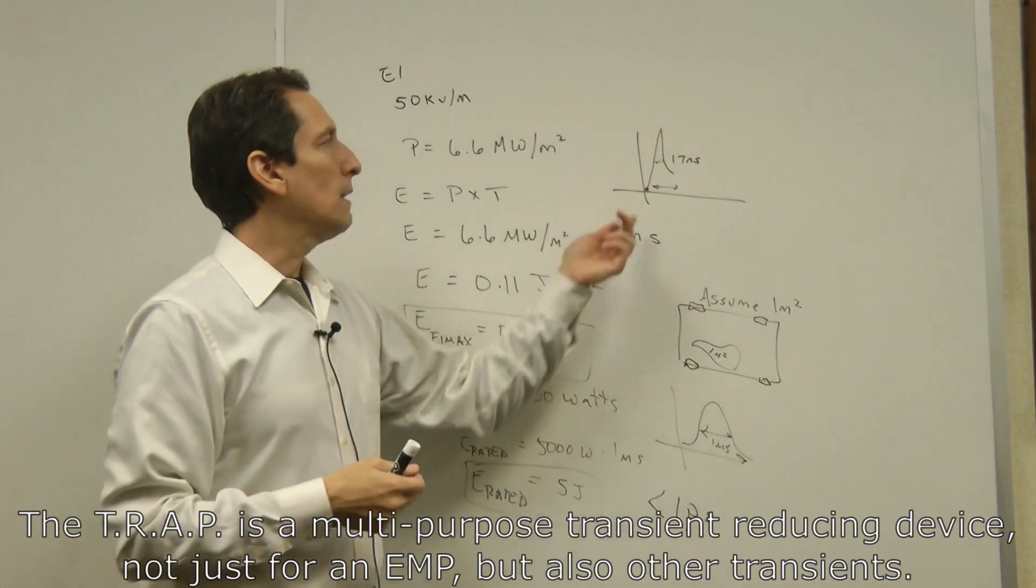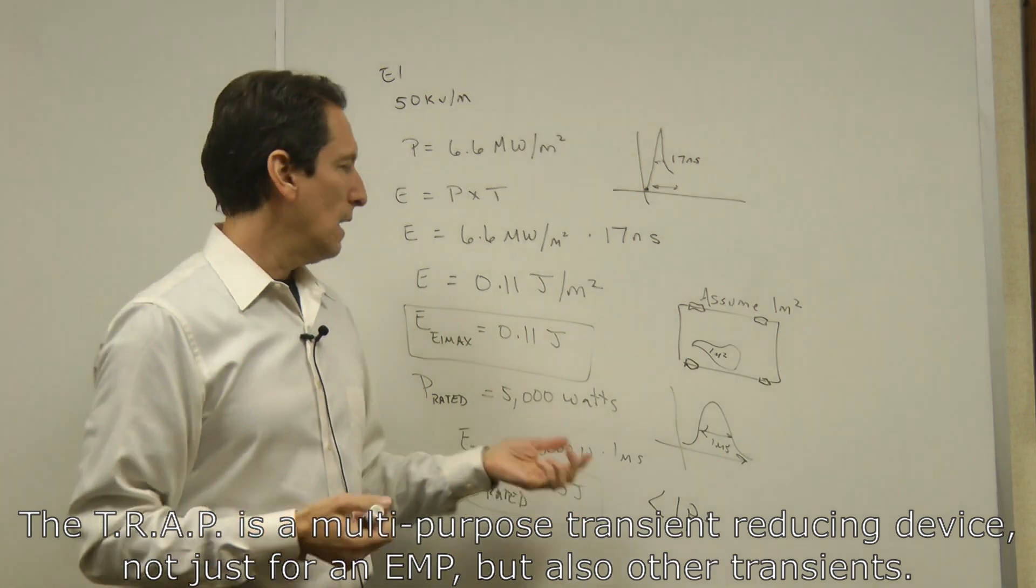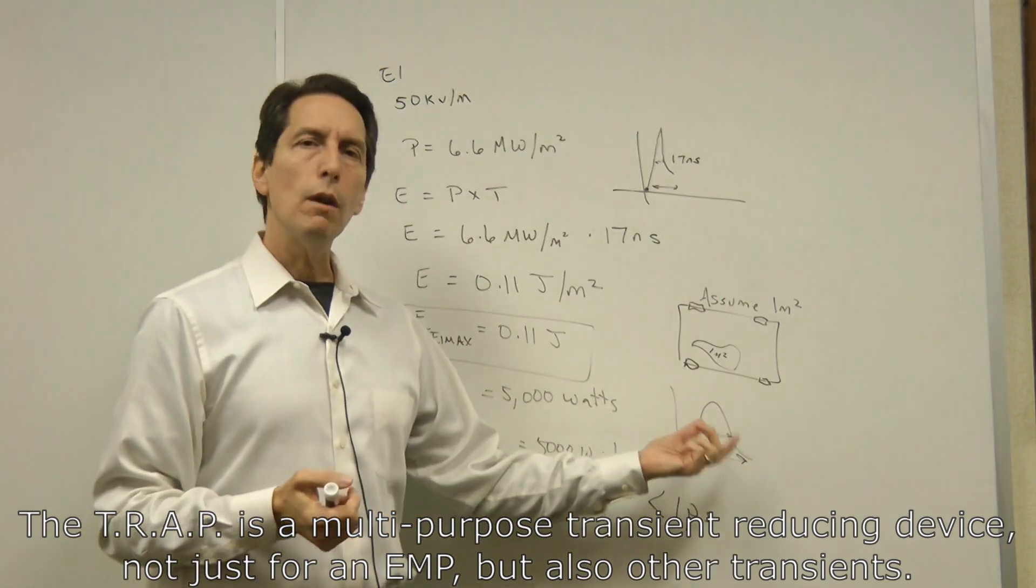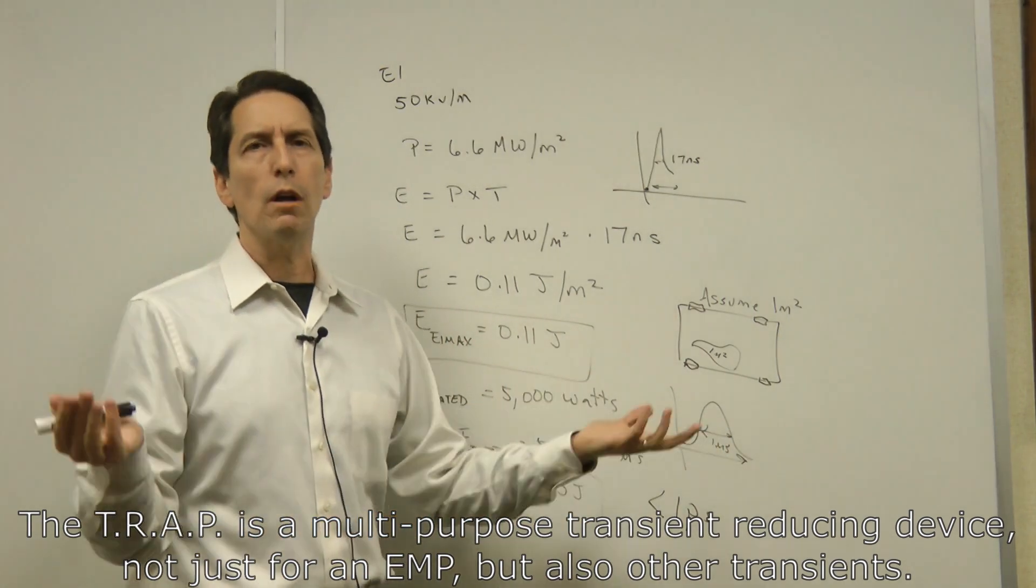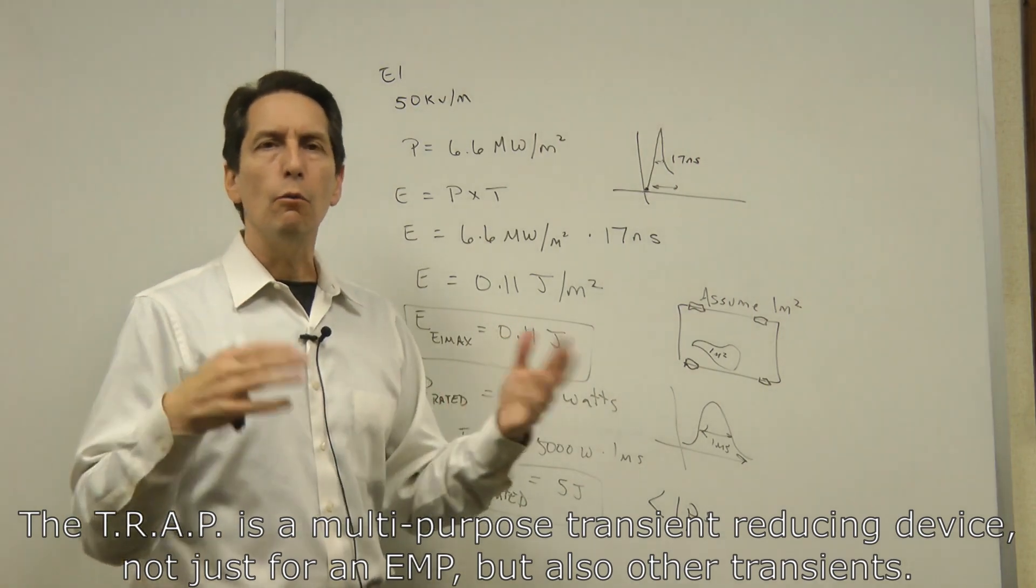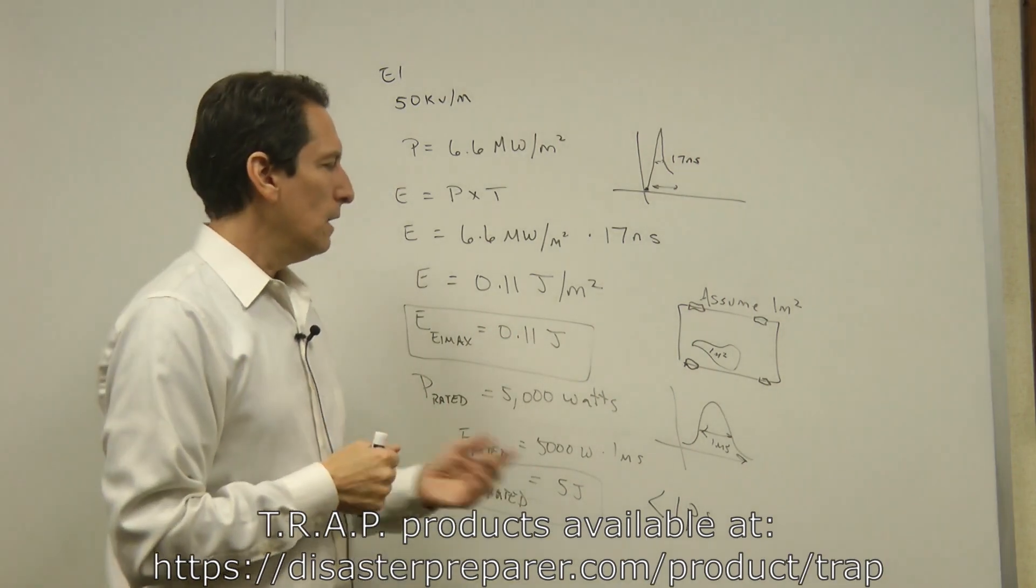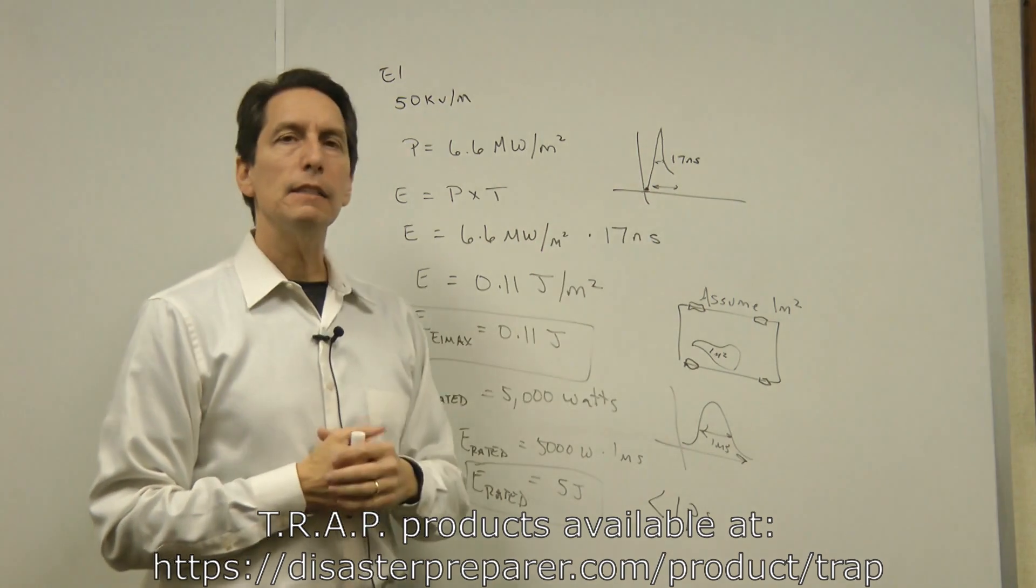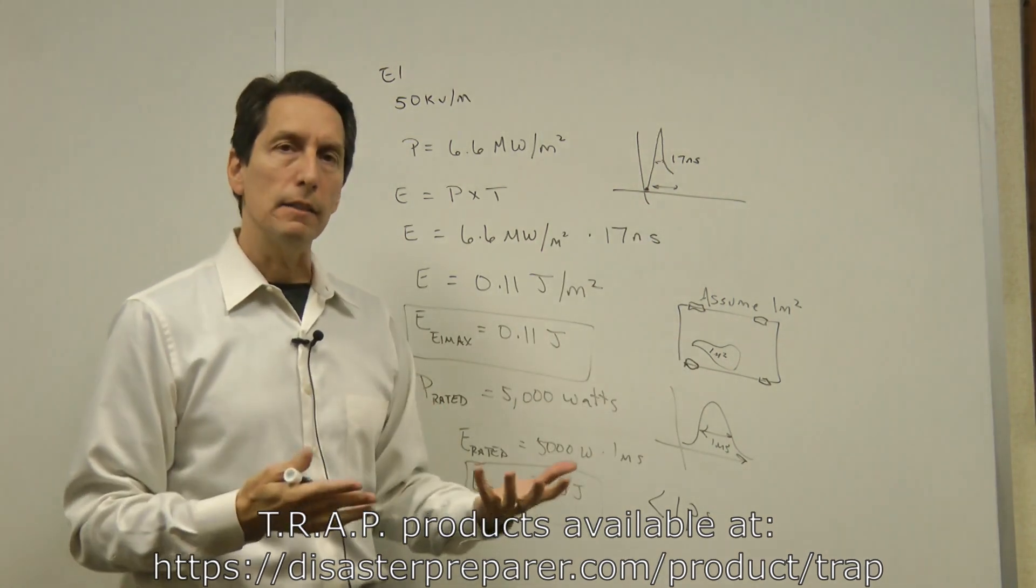So that's how I selected the component inside the trap and that's why I believe it would be effective not only for an EMP like the E1 event of an EMP but also many other transients. Again, remember this was rated for a one millisecond pulse and those are much more common like in your vehicle when normal transients are kicking around. So it will not only handle very fast transients but it will also handle much slower transients.